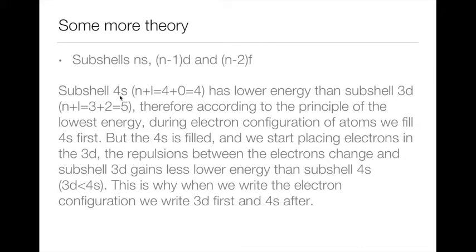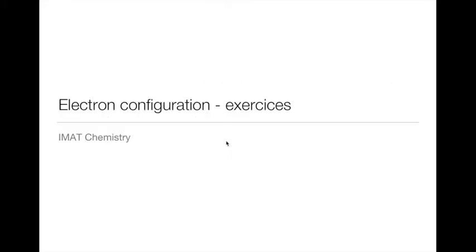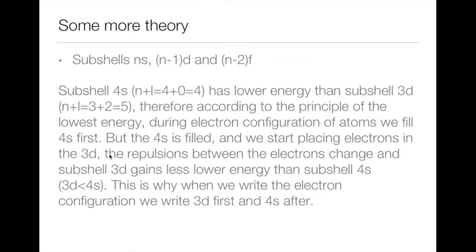We saw that the subshell 4s has a lower energy than subshell 3d. Therefore, according to the principle of lowest energy, during electron configuration of atoms we fill 4s first and 3d after. But when the 4s is filled and we start placing electrons in the 3d, the repulsions between electrons change and the 3d subshell gains lower energy than 4s. Therefore the total energy of 4s becomes higher than that of 3d.